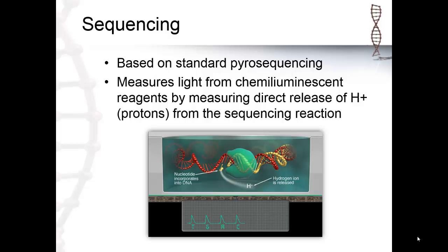Because optics aren't required, they are able to make relatively inexpensive instruments coupled with disposable chips, which essentially act as pH meters. The lack of optics also means they don't have to contend with slow image scans, so the sequencing reaction can be relatively fast, with 200 base pair long reads taking about 2 hours. Finally, the lack of fluorescence or chemiluminescence means the system can use unmodified nucleotides, which are cheaper and better tolerated by DNA polymerase, leading to a more efficient sequencing process.